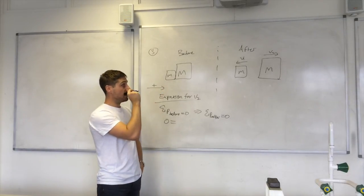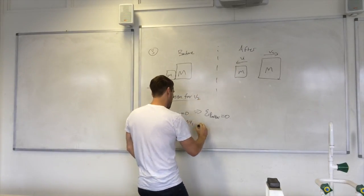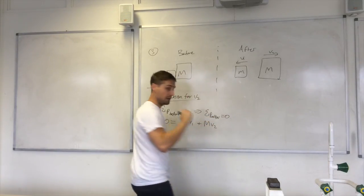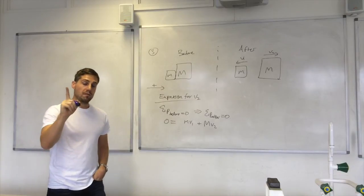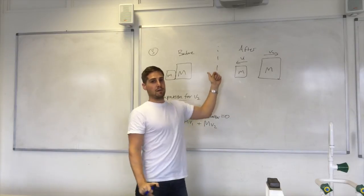The total momentum after m times v1 plus capital M v2. Okay? One thing I didn't do, you may have spotted it, and that is v1 is to the left. That's in the negative direction.